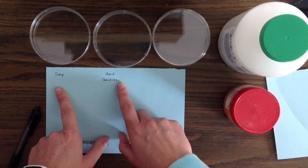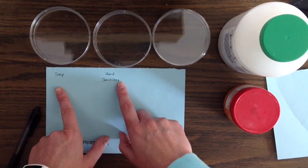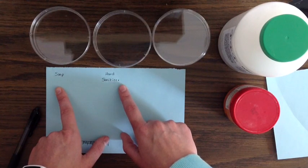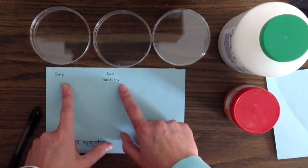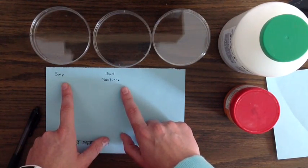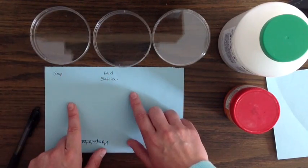The control is something that stays exactly the same. The manipulated variable is basically what you're testing. Here we're testing what works better: soap or hand sanitizer. So that's the one thing that we're comparing.